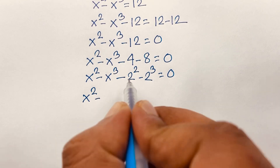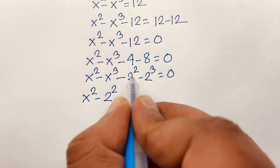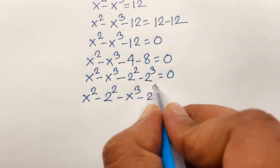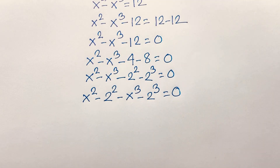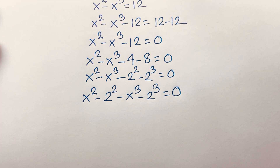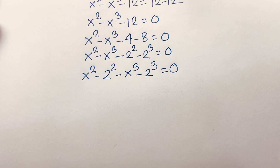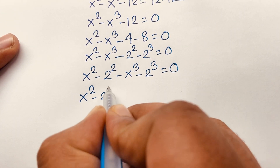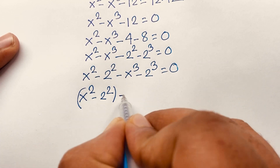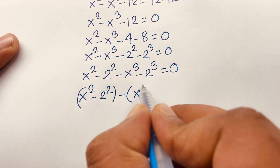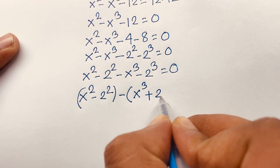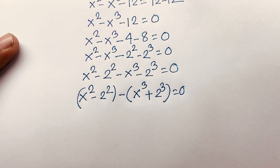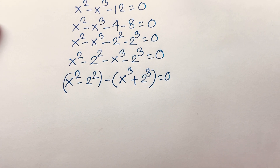The equation becomes: x squared minus 2 to the power 2, minus x cubed minus 2 to the power 3, equals 0. This rearranges to x squared minus 2 squared, minus bracket x cubed plus 2 to the power 3, equals 0. The sign becomes plus because minus times minus is plus.